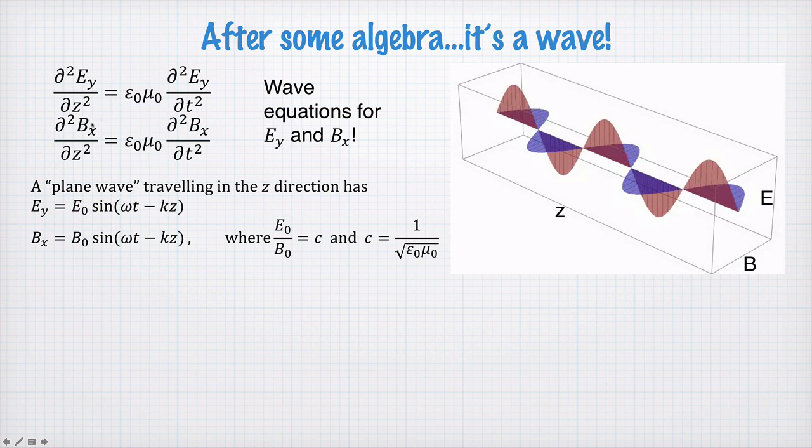So E and B, the electric and magnetic fields, are perpendicular to each other. The electric field points in the y direction, the magnetic field points in the x direction, and they both obey these wave equations here.